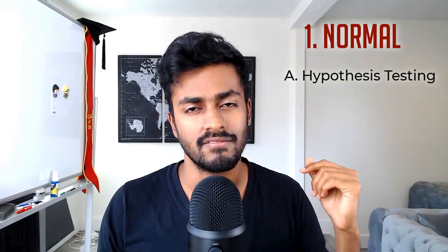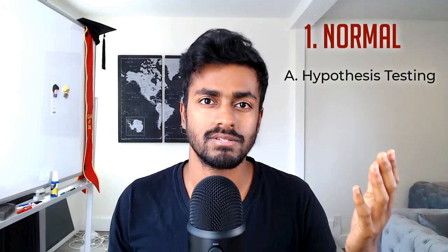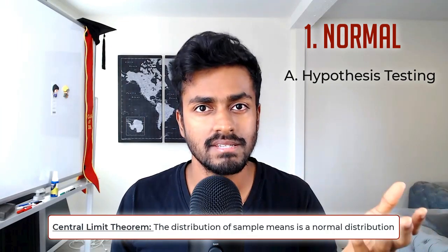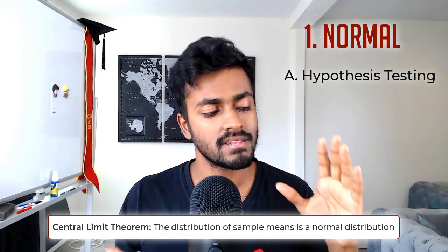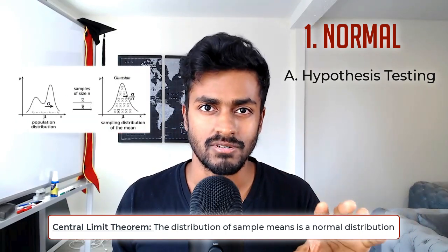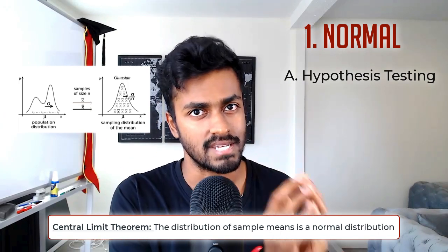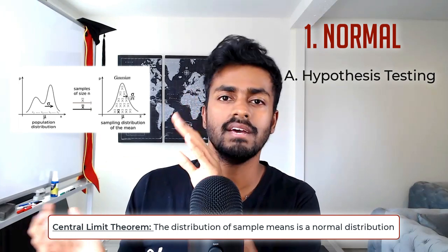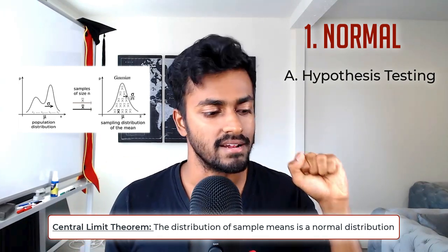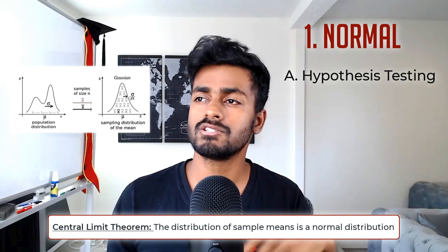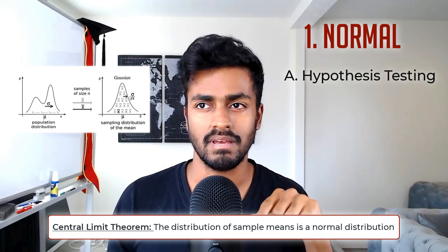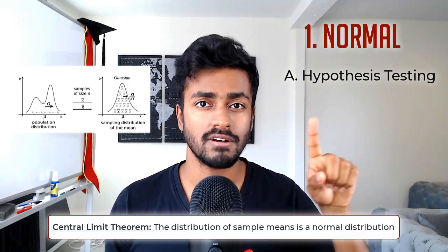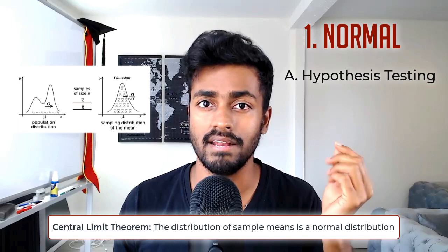The main assumption here gets into the central limit theorem, which states that the distribution of sample means should be normally distributed. The CLT tries to relate the population with the samples we take. If we have a population of 500,000, take a sample size of 1,000, compute the mean, and repeat this 400 times, we get 400 means — and their distribution should follow a normal distribution.